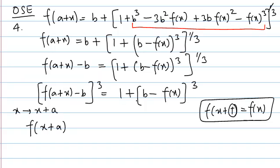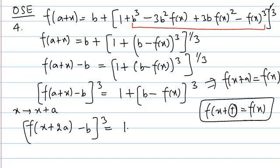because see the period is not a, because you can see f(x) is there, f of a plus x is there and it cannot be simplified to f of x plus a equal to f(x). So period is not a. So that's why we try this, replace x by x plus a with an expectation that period might be 2a and see how we are able to simplify this. Whole cube equals to 1 plus b minus f of x plus a whole cube.